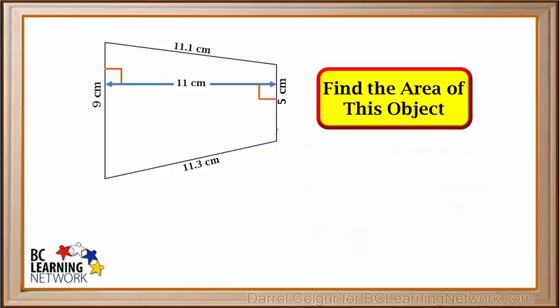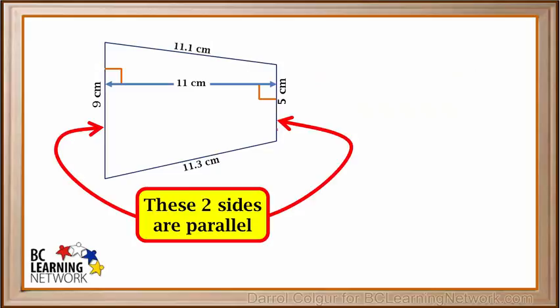Here's an example. We're asked to find the area of this object. We see that these two sides are parallel, but the other two are not. Since this object has only two parallel sides, it is called a trapezoid.